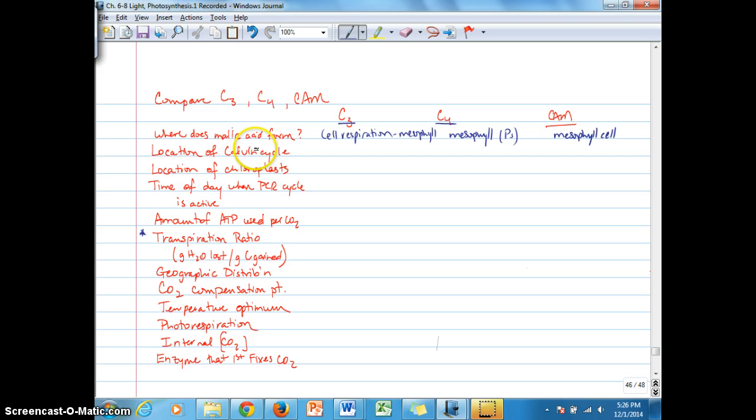The next question is in terms of the location of the Calvin cycle. We're going to see that also in the mesophyll cell in the C3 plant. The question is, where does the Calvin cycle occur in C4 plants versus CAM plants? Remember, we didn't have a separation in space for the CAM plants, so that happens in the mesophyll cell. But the question is, where does this happen in the C4 plants? Since C4 separates the steps of the Calvin cycle versus the initial CO2 fixation step in space between the mesophyll cell and the bundle sheath cell, the Calvin cycle is located here in the bundle sheath cell, which means that's where rubisco is going to be found.